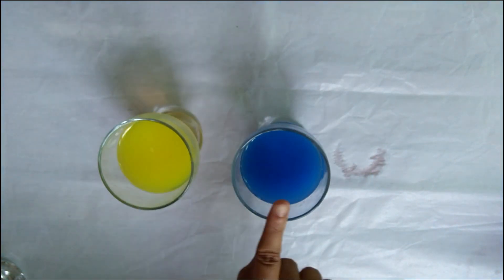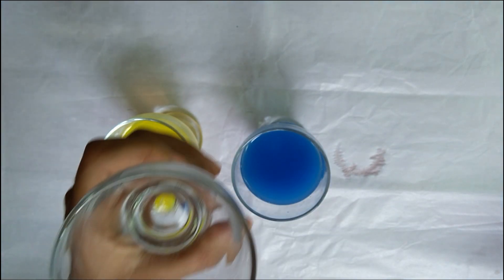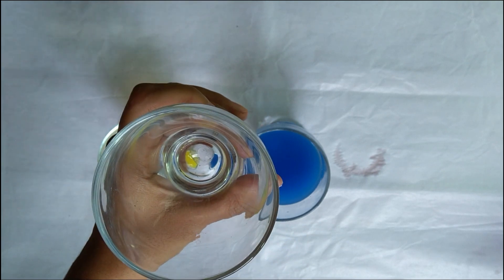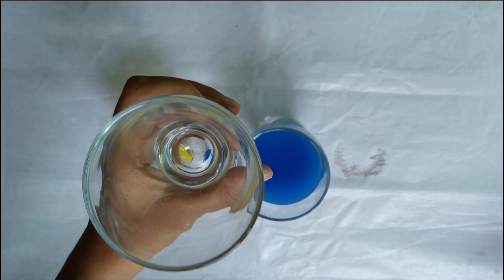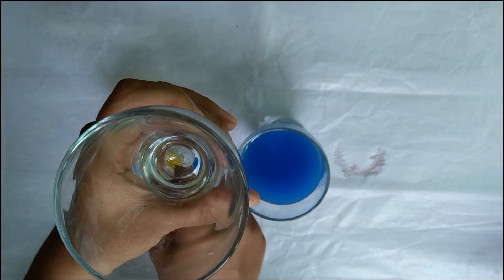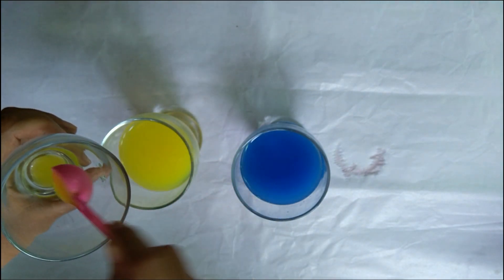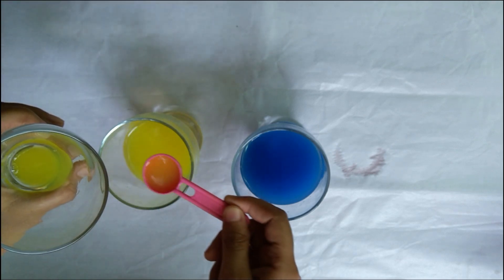Both the colors have to be mixed in equal proportion to get the results. That is, if I take four spoons of yellow color, I have to take four spoons of blue color.